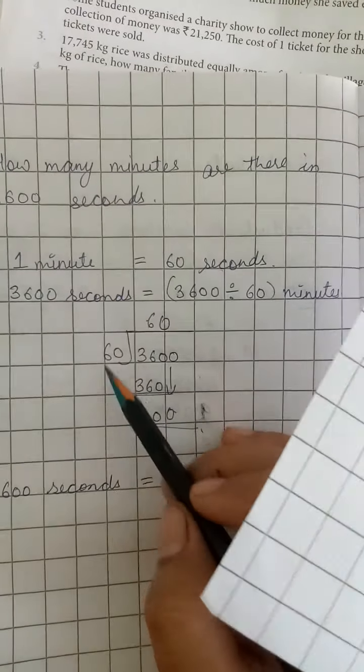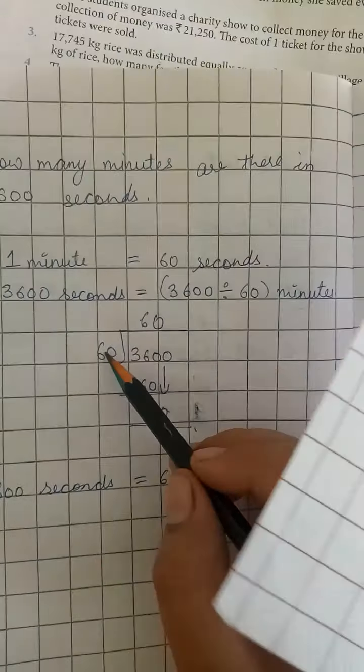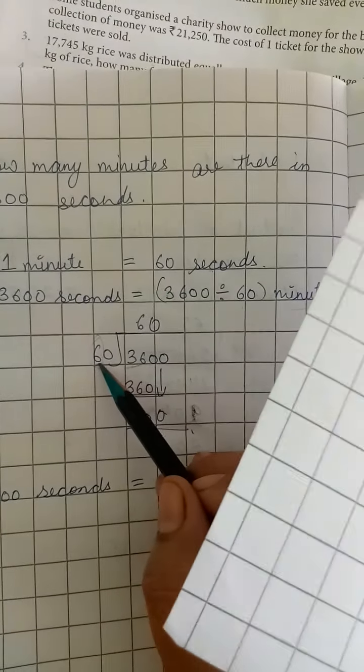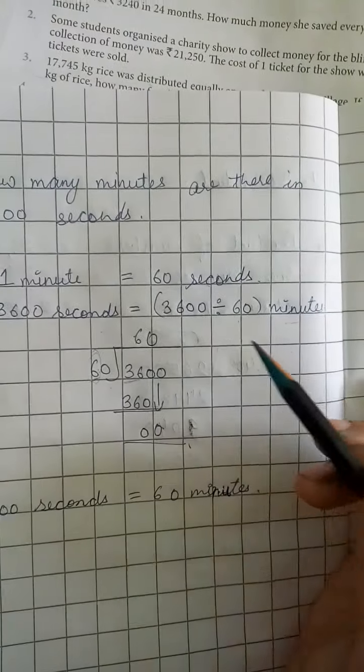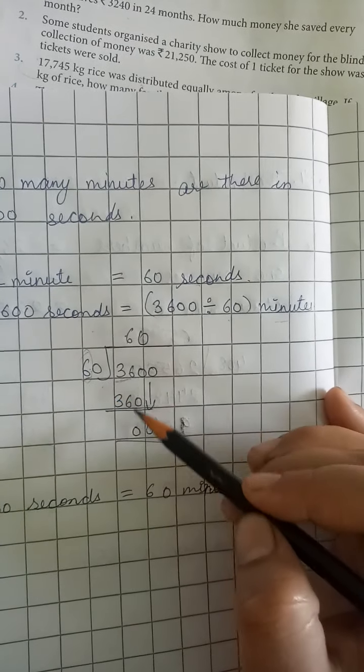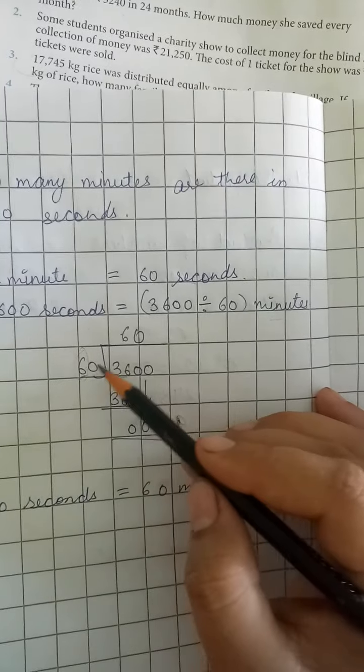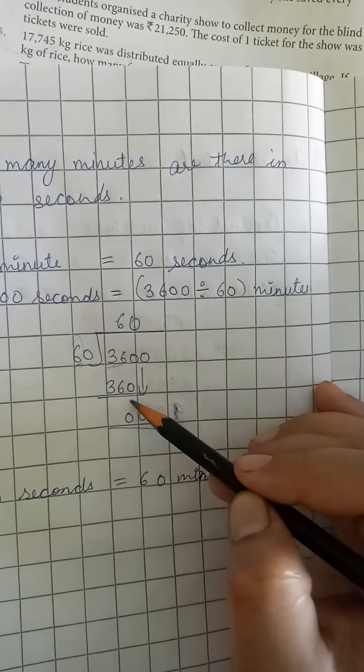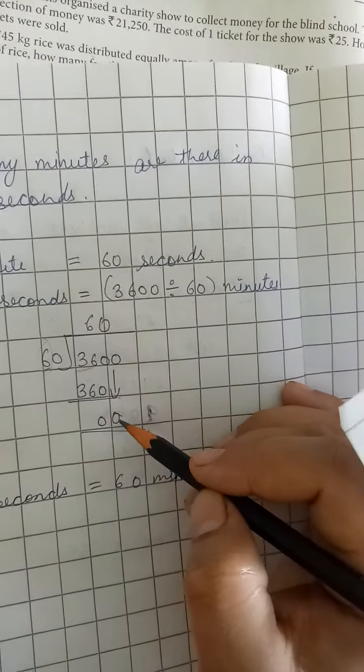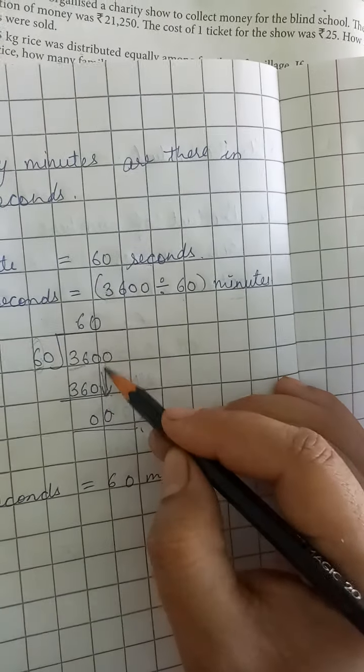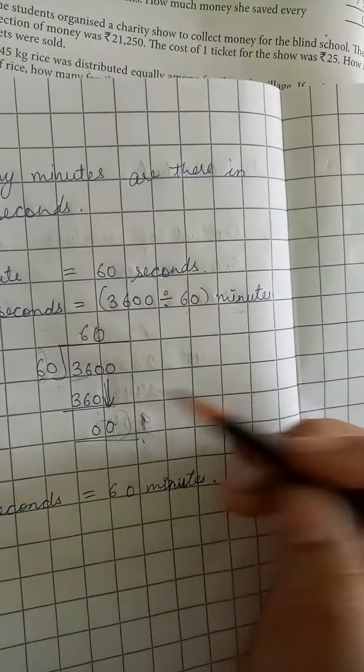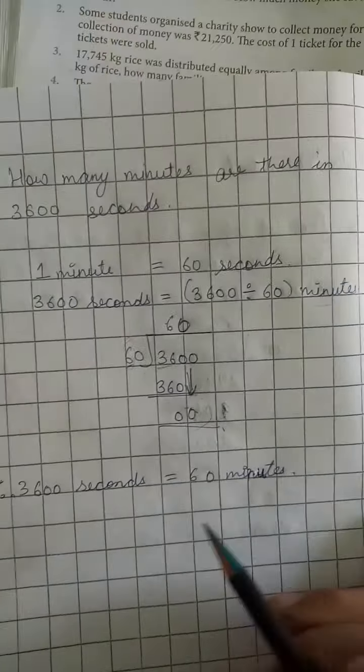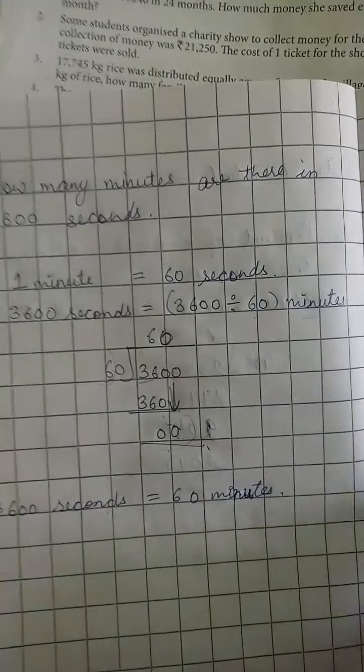3,600 divided by 60. We don't know the 60 table, so what will we do? We'll multiply and check, or count the table until we reach this number. 6 × 5 is 30, 6 × 6 is 36. So we get 36. 60 × 6 is 360. When we subtract 360 from 3,600, we get 0. Now we will bring down 0. 0 is less than 60, we can't divide it, so we will write 0 here. So 3,600 seconds equals 60 minutes.